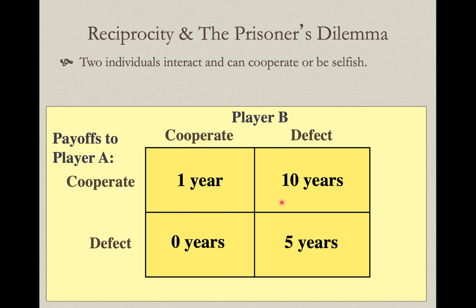This asymmetry in potential jail time creates a big temptation to defect. The reason they're interrogated separately is that if they looked at each other and agreed — 'these cops don't have anything on us; if we just keep our mouth shut, we'll get minimal jail time' — that's the cooperation option. But if they both squeal at the same time, the cops have enough evidence and send them both to jail for five years. That's the mutual defection penalty.